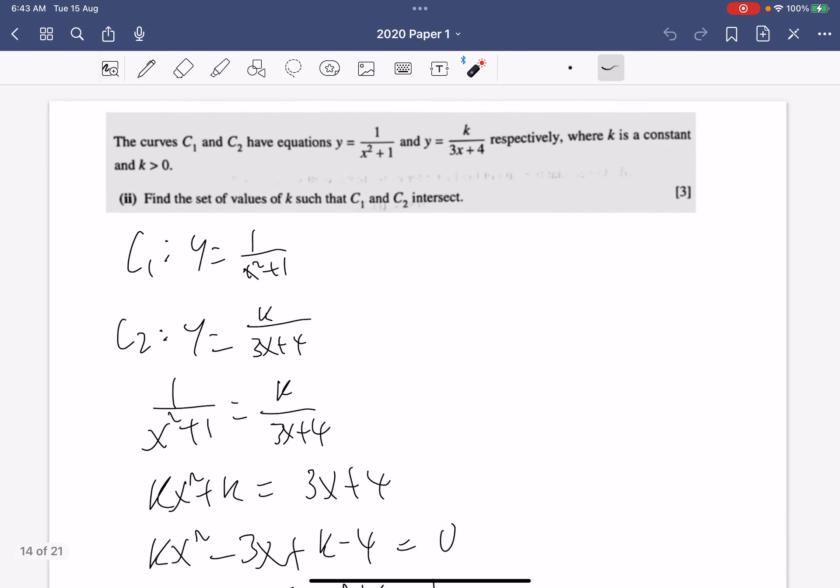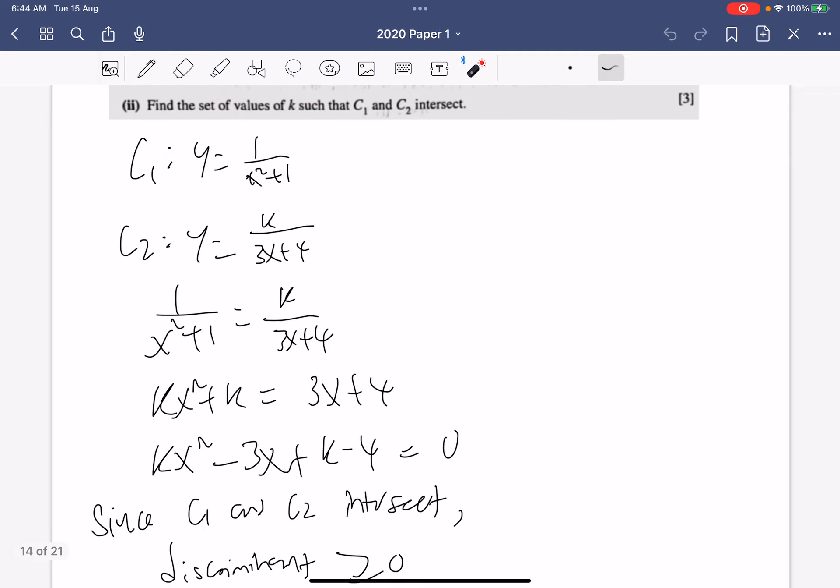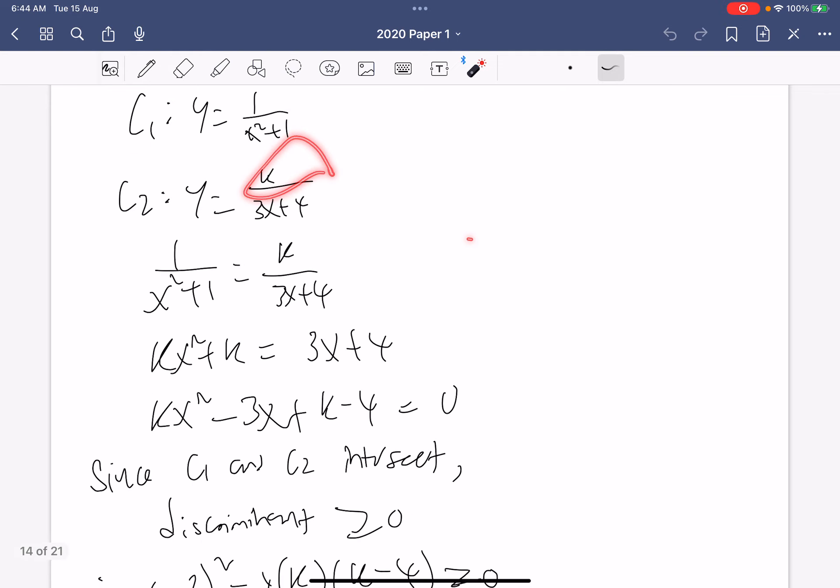Now the curve c1 and c2 have equations 1 over x squared plus 1 and k over 3x plus 4. So we're supposed to find the set of values of k such that c1 and c2 intersect. So you just write the equation for c1 and you write the equation for c2. Intersect means they're equal to each other, then you manipulate and you get this quadratic equation.